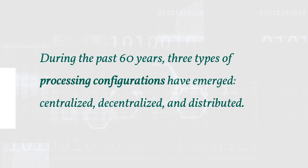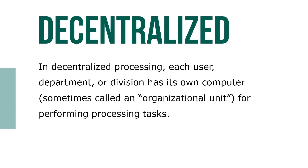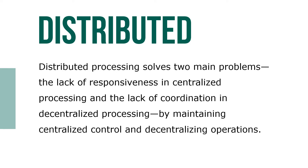During the past 60 years, three types of processing configurations have emerged: centralized, decentralized, and distributed. In a centralized processing system, all processing is done at one central computer. In a decentralized processing system, each user department or division has its own computer for performing processing tasks. Distributed processing solves two main problems — the lack of responsiveness in centralized processing and the lack of coordination in decentralized processing — by maintaining centralized control and decentralizing operations.